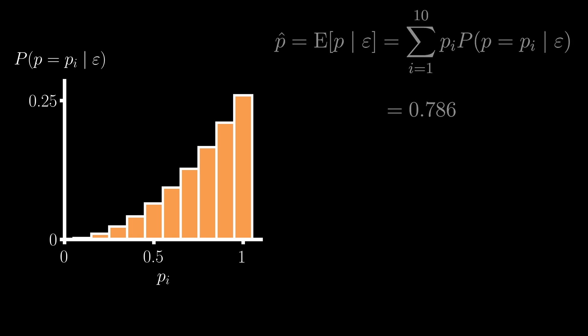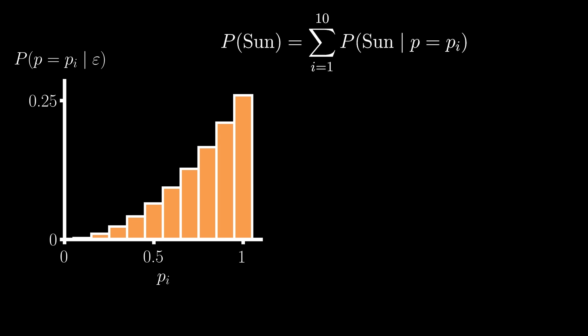Now, how can we use our distribution to determine the probability that we will see the sun tomorrow? Well, one thing we could do is evaluate the probability that the sun will rise for each possible parameter value, weighted by the chance that the parameter value is the true one. And the probability the sun will rise is simply the summation of each of these probabilities.